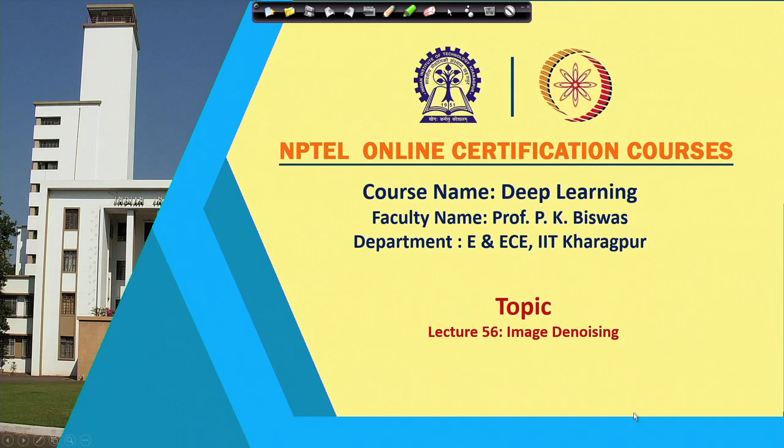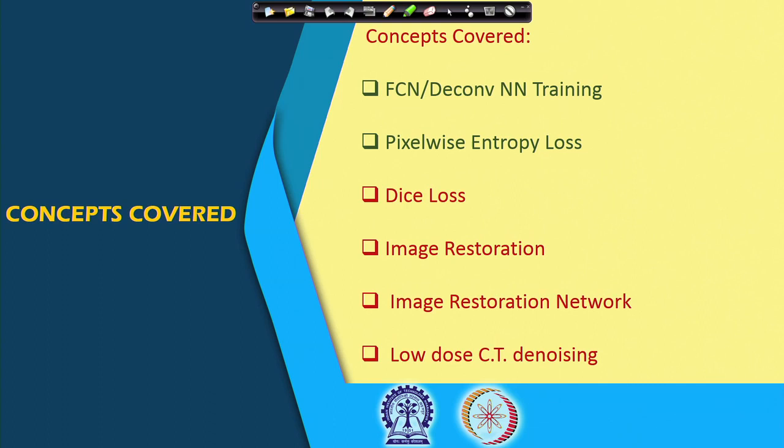For training the neural network, we need to define a loss function, so that using back propagation learning while performing gradient descent training, the loss function will aim to minimize the loss with respect to the network parameters. In the previous class, we talked about a loss function which is pixel-wise entropy loss. Today, we will talk about another loss which is known as Dice loss. Dice loss is applicable for training the neural network which is meant for performing semantic segmentation.